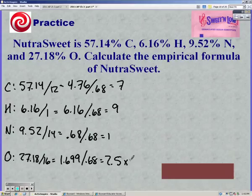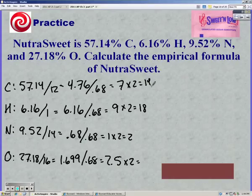Notice we didn't get whole numbers, so we have to multiply by some number to give us a whole number. So we have to multiply by 2 because 0.5 times 2 would give us a whole number. So we get 14, 18, 2, and 5.